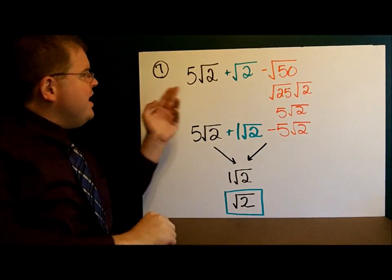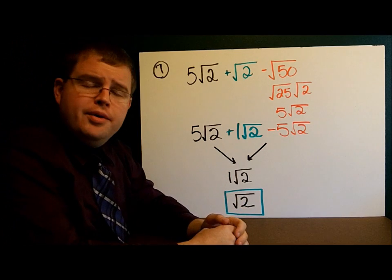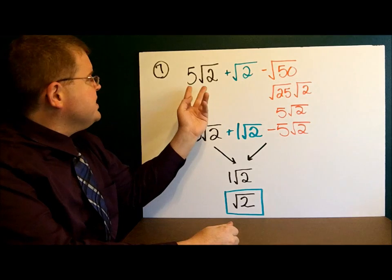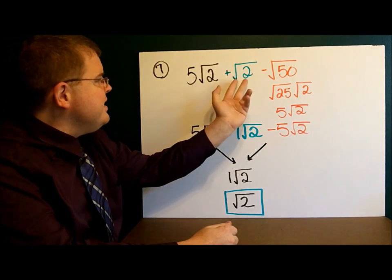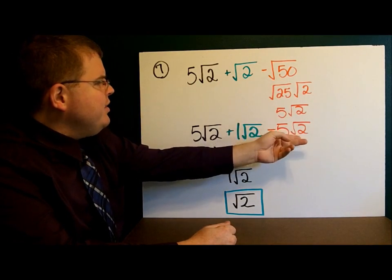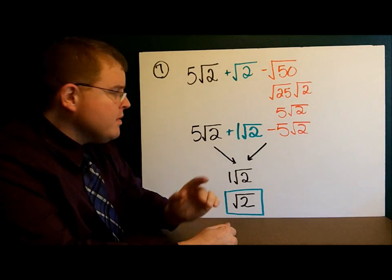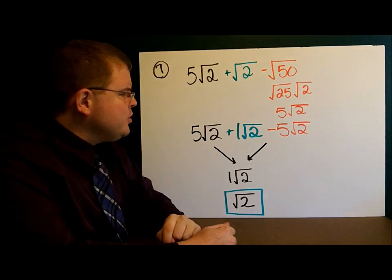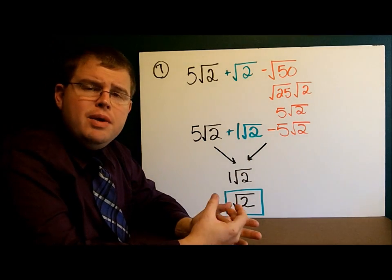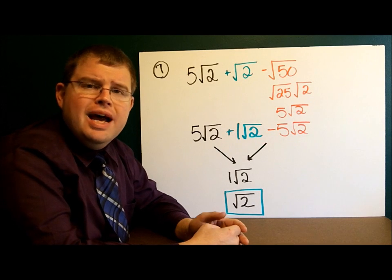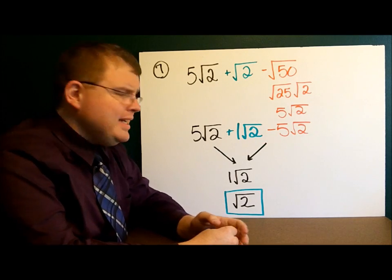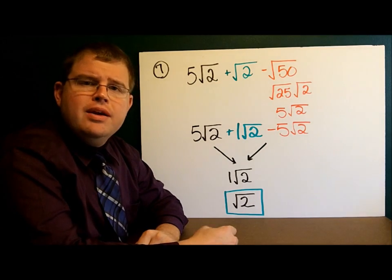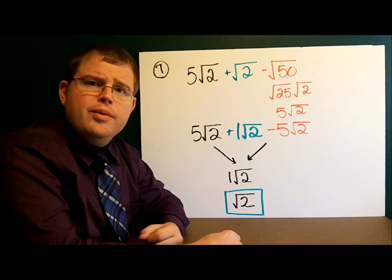Finally, number 7: 5 square roots of 2 plus the square root of 2 minus the square root of 50. Let's simplify the radicals. The first two are already in simplest form, but 50 breaks down to 5 square roots of 2. So we have 5 square roots of 2 plus 1 square root of 2 minus 5 square roots of 2. Combining those, we end up with 1 square root of 2. Once you have your final answer, it's not necessary to write the 1 in front — we can simply say the square root of 2. And that's how you add and subtract square roots.